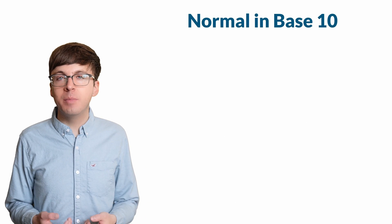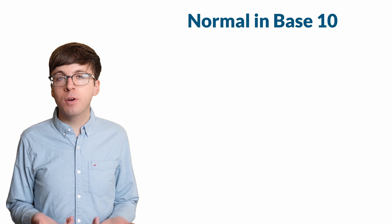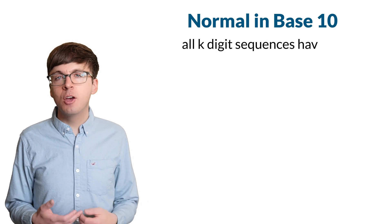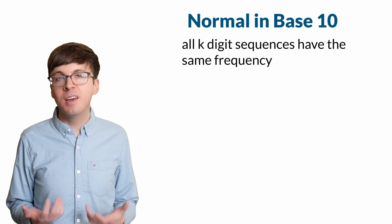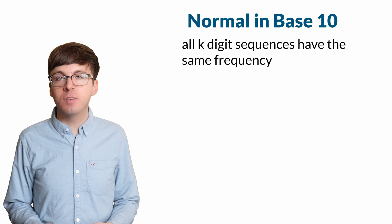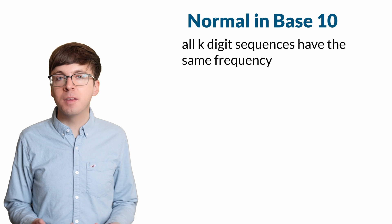We say a number is normal in base 10 if, in the long run, every k-digit sequence shows up with the same frequency as every other k-digit sequence. We can state this rigorously by taking a limit.